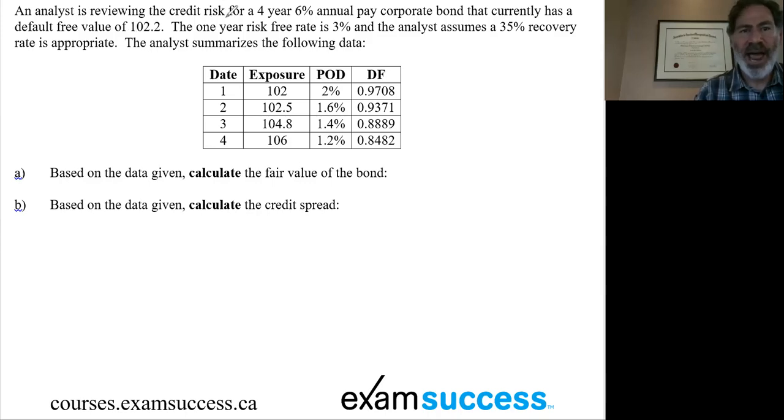Here's the information. Analyst reviewing the credit risk for a four-year 6% annual pay corporate bond currently has a default free value of 102.2, a default free value. Who uses that kind of language? Come on.